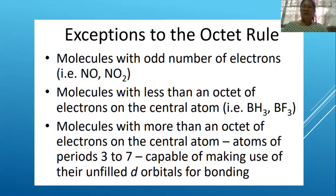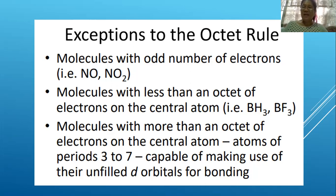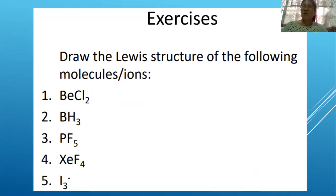There are exceptions to the octet rule: first, molecules with odd numbers of electrons such as NO and NO2; second, molecules with less than an octet on the central atom, such as BH3 (boron trihydride or boron trifluoride); third, molecules with more than an octet on the central atom, which belong to period 3 to 7 elements and can use D orbitals. These exercises are to be submitted by Monday.